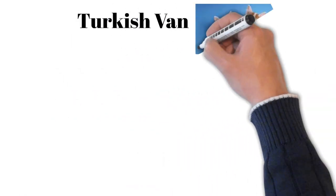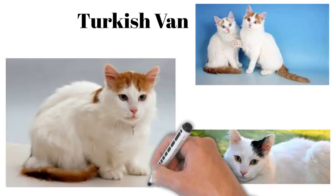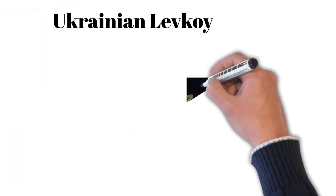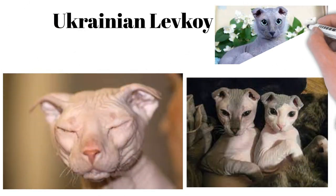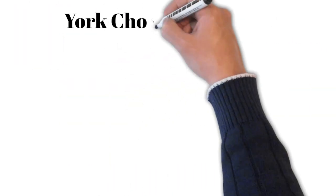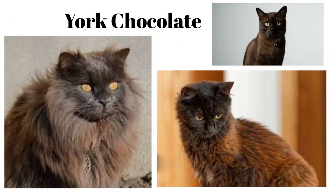Turkish Van: loves swimming, semi-long-haired, color on head and tail only. Ukrainian Levkoy: distinctive appearance with folded ears, affectionate, intelligent. York Chocolate: luxurious chocolate coat, friendly, affectionate, loves cuddling.